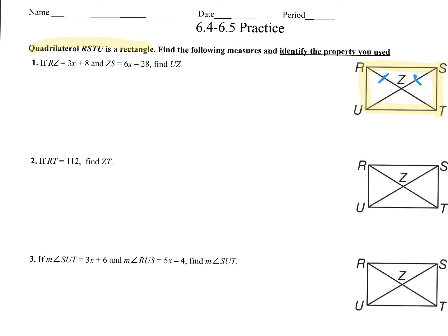RZ is 3X plus 8 — that's this section right here. And then ZS is 6X minus 28 — ZS is right here. In a rectangle, we have congruent diagonals. That's the diagonal test, and that's how we determine whether a parallelogram is a rectangle or not.